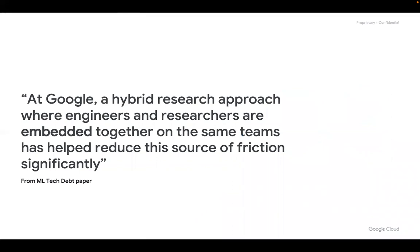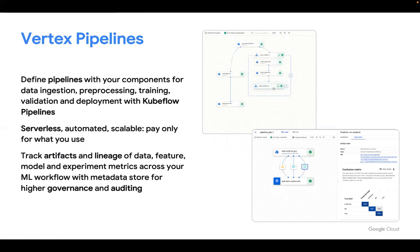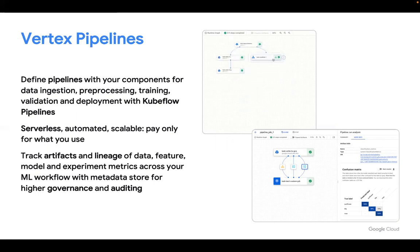At Google, a hybrid research approach where engineers and researchers are embedded together on the same team helped reduce friction significantly. In most teams, researchers and engineers work separately — but Google says a researcher and an engineer should work together. Some rules from the paper include: know the freshness of the record, plan the launch and iterate. Vertex AI pipelines implement all these best practices — it's not just a pipeline, it has an entire history of how to train, compare, and productionize models.